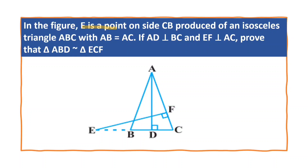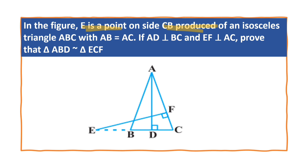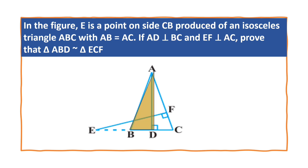In the figure, E is a point, this is C, on the side CB produced of an isosceles triangle ABC. This is isosceles triangle ABC with AB equal to AC. AD is perpendicular to BC and EF is perpendicular to AC, AD perpendicular to BC, CF perpendicular to AB. This angle is 90 degrees, this angle is 90 degrees. Prove that triangle ABD is similar to triangle ECF.